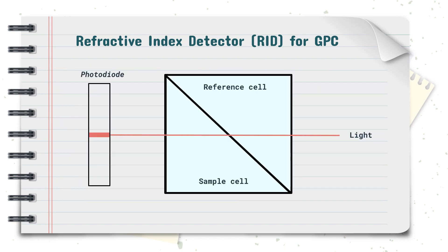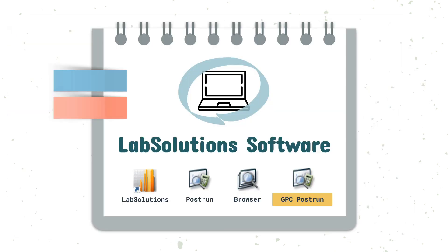As solutes elute out from the column and into the sample cell of the detector, the composition of the mobile phase in the sample cell changes, causing the light beam to refract due to the difference in refractive index. This results in a horizontal shift in the image produced on the photodiode, the distance of which is proportional to the difference in refractive index between the sample and reference cell.